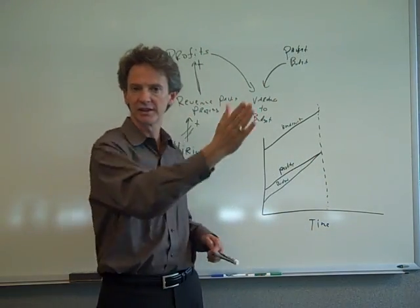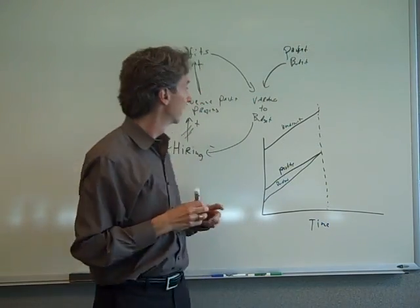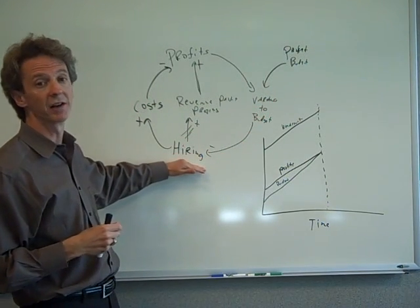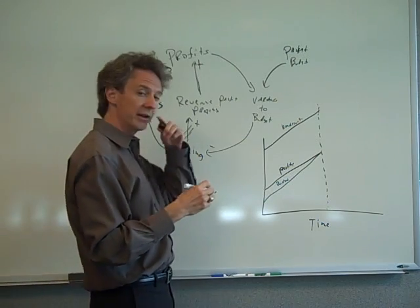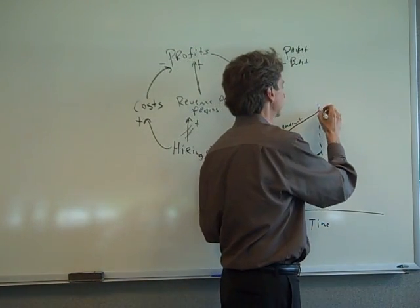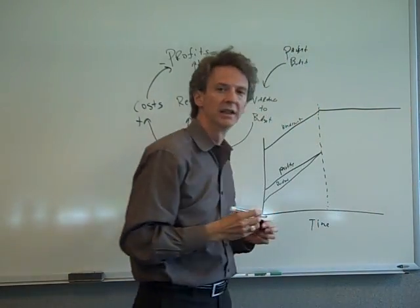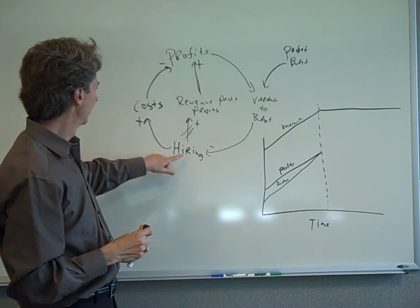And then you start, your budget starts to exceed your profits. So you start having a negative variance. So what is going to happen in this system, the negative variance is going to cause you to stop hiring. So your headcount is going to flatten out.